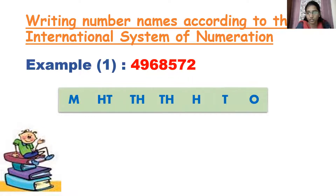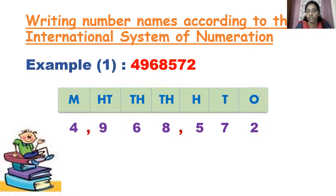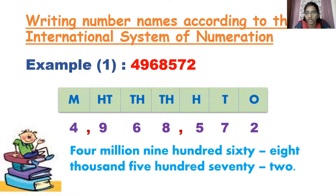So here, to insert commas, you should know the places. From right to left, you start: ones, tens, hundreds, thousands, then million according to the number. This is according to international system of numeration. I have inserted the commas according to international system of numeration. So here you have the number that is 4,968,572. This is the numeral you got.